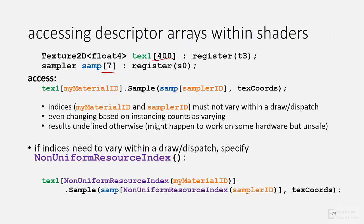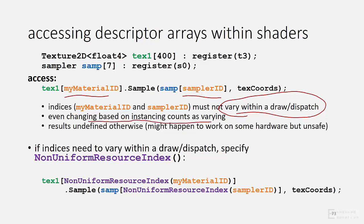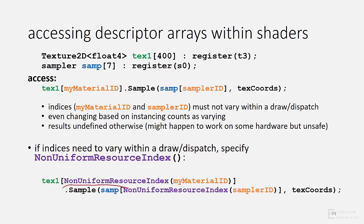Accessing resources declared as arrays is as straightforward as indexing them using any variable in a shader. There is, however, an important constraint: index values are not allowed to vary within a draw or dispatch — even changing the index based on instancing counts as varying. If you do vary the index within a draw or dispatch, the results are undefined. That's the default behavior. If you really do need to vary index values, you need to specify the non-uniform resource index qualifier on the index. On some hardware, that causes special code to be generated that enables divergence in the indices across neighboring threads running in lockstep in the hardware.